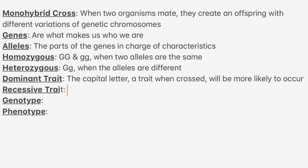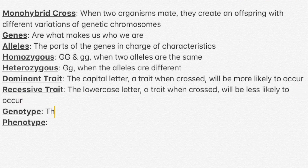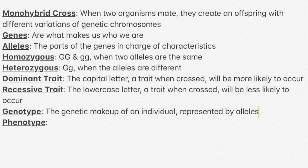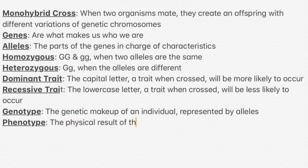Dominant traits are represented by the capital letters, representing alleles that when crossed, they are more likely to appear. Recessive traits are represented by the lowercase letters, representing alleles that when crossed are less likely to appear.